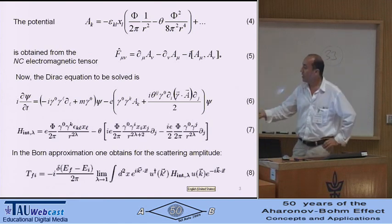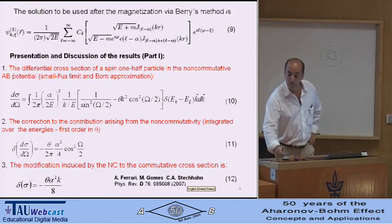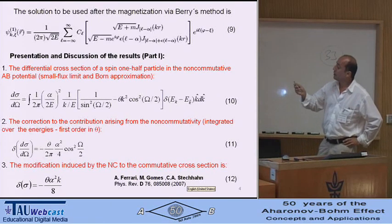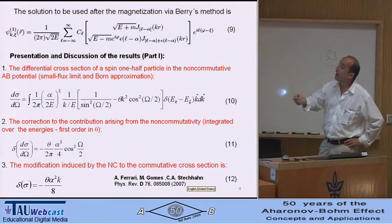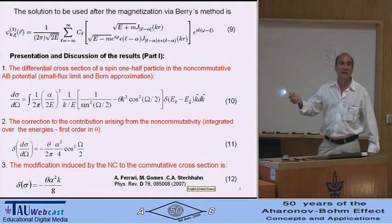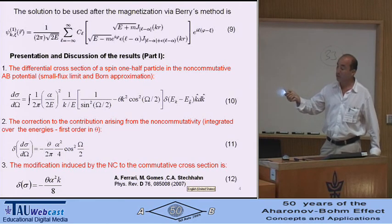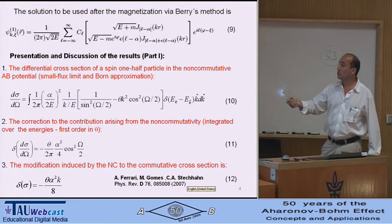And I change this to the magnetization via Bessel methods. The U by psi given by nine. After a lot of calculations, I obtain the differential cross-section, the contribution to the non-commutativity, and the total cross-section.